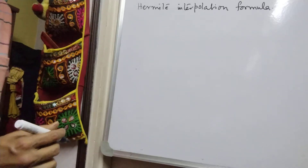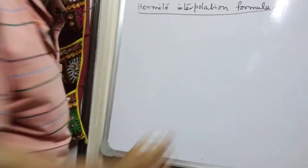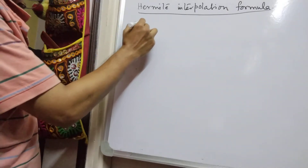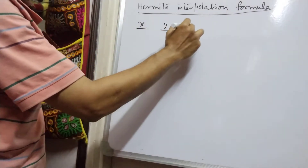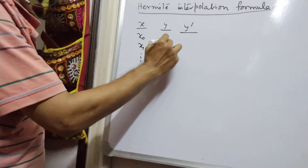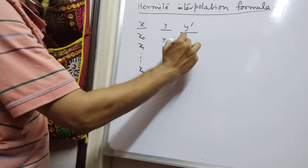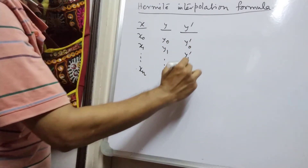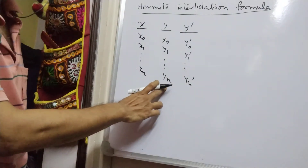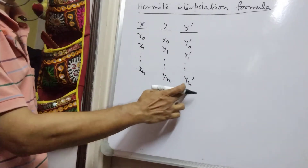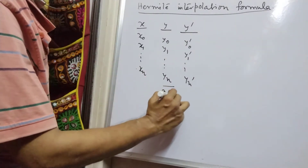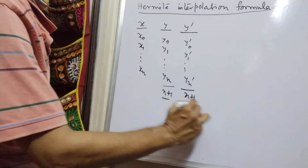Hermite interpolation formula is special in the sense that here we have the values of y as well as its derivative for n plus 1 nodes. It is different from all other interpolation formulas, where we usually have the values of the function only. Here we have the values of the function as well as the values of the derivative at the respective points, giving us altogether 2n plus 2 arguments or nodal points.